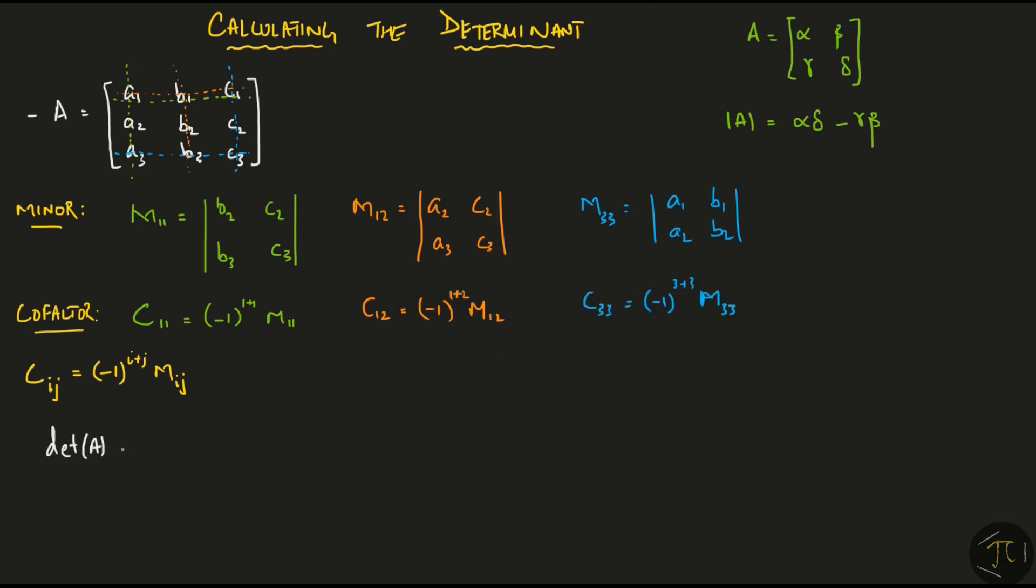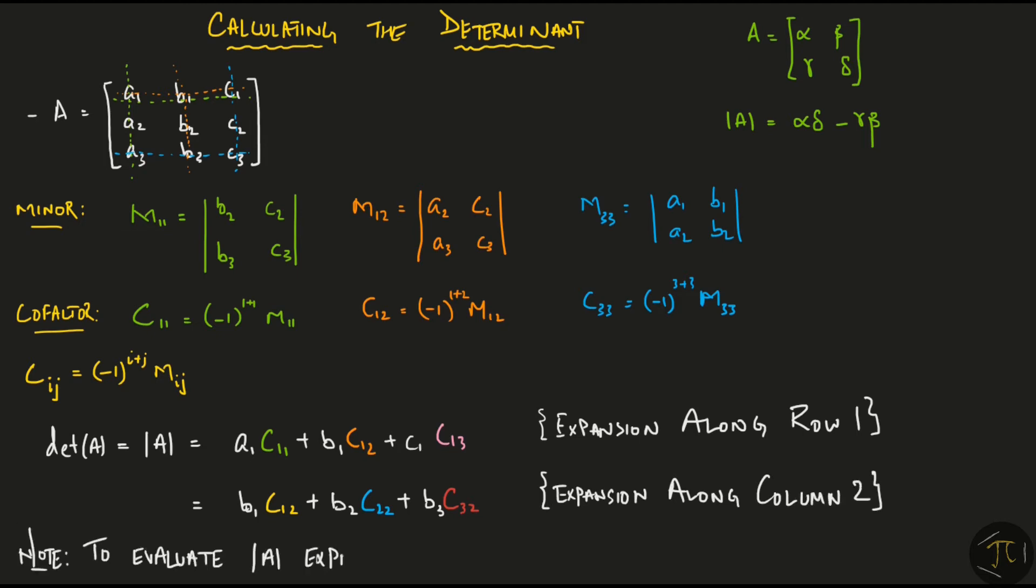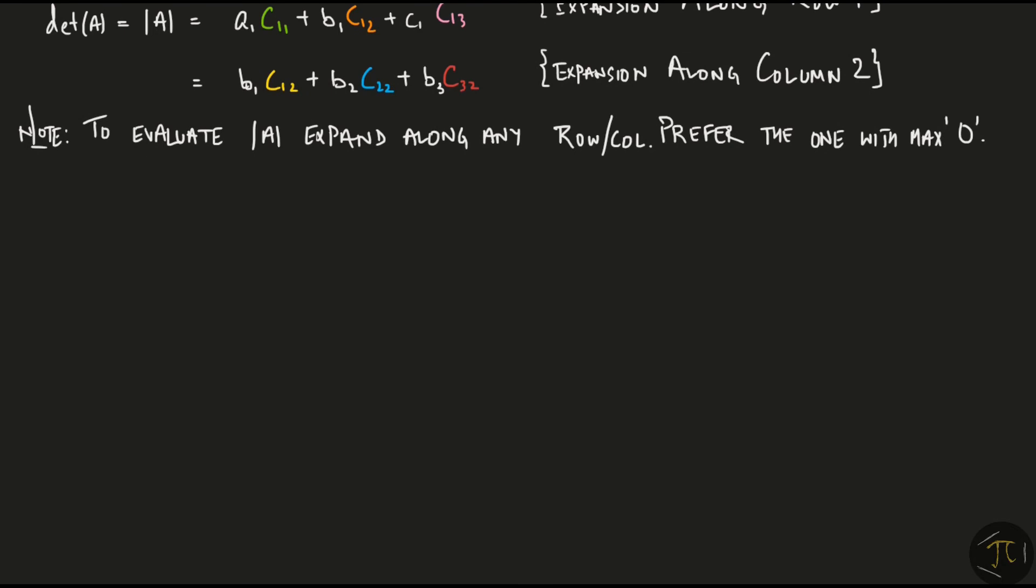Now we are ready to calculate the determinant of a. It is given by a1 c11 plus b1 c12 plus c1 c13. This is when you do the expansion along row 1. But you can also write the determinant by expanding along any other row or column like b1 c12 plus b2 c22 plus b3 c32. This is when you expand along column 2. You can evaluate the determinant along any row or column but you should always prefer the one with the maximum number of zeros in it. An example should make this process clear. The determinant of this matrix expanding along the first row is 1 times c11 plus 2 times c12 plus 3 times c13. Now substitute for the cofactors and you get the answer as 12.